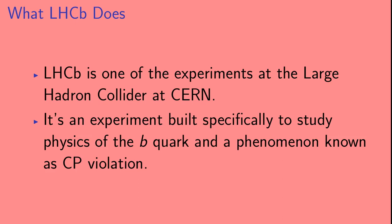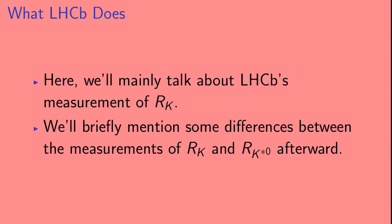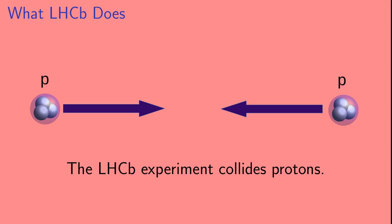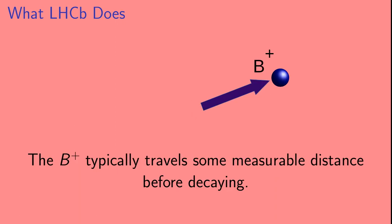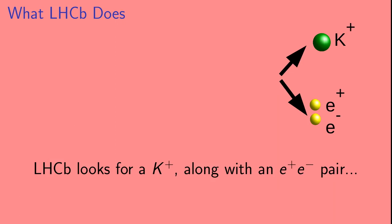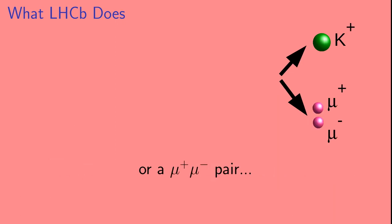LHCb is one of the experiments at the Large Hadron Collider at CERN, built specifically to study physics of the b quark and a phenomenon known as CP violation. We'll mainly talk about LHCb's measurement of Rk, and briefly mention some differences between the measurements of Rk and Rk-star afterwards. The LHCb experiment collides protons, and occasionally a collision produces a B+ or B- meson. The B+ typically travels some measurable distance before it decays, and LHCb looks for a K+ along with an e+e- pair or a mu+mu- pair that results from the decay of the B meson.